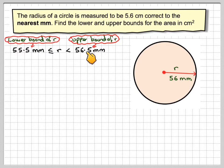So the radius can be anywhere between 55.5 up until 56.5. It's not equal to that, but that is the actual bound. Now, as we want the area in centimeters squared, we need to convert these into centimeters. So it gives me 5.55 centimeters to 5.65 centimeters.